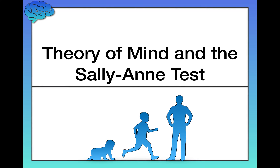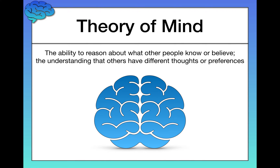In this video, we're going to continue our discussion of developmental psychology by learning about Theory of Mind and the Sally Ann Test. Theory of Mind has been a hotly debated topic within the field of developmental psychology for a very long time. Even the definition of Theory of Mind has been up for debate. Theory of Mind is the ability to reason about what other people know or believe, and as a consequence, it's the understanding that other people can have different thoughts or preferences than we do.